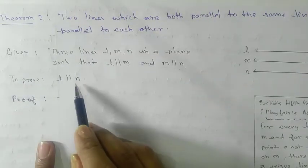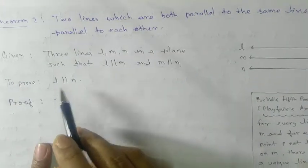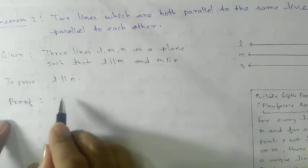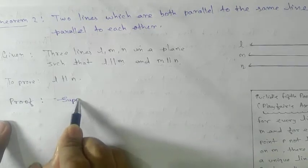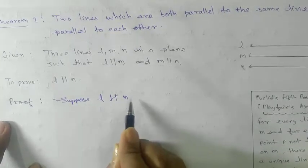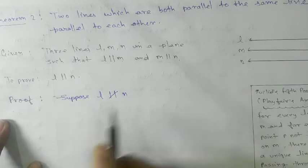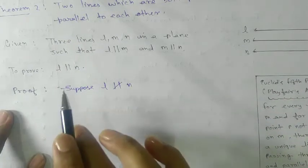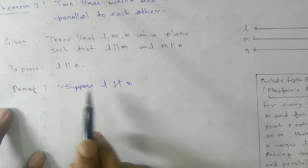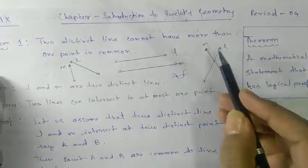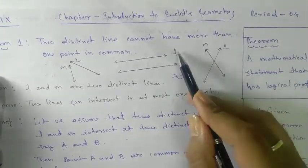Take three lines L, M, and N. If L is parallel to M, and M is parallel to N, then we need to prove that L is also parallel to N. Again we will use the contradiction method. Suppose L is not parallel to N — we will derive a contradiction and conclude that L must be parallel to N.